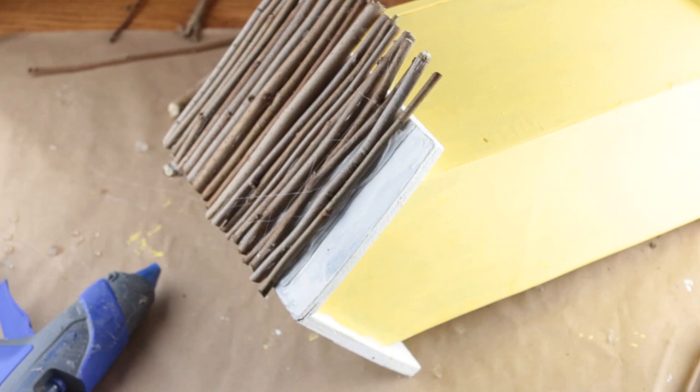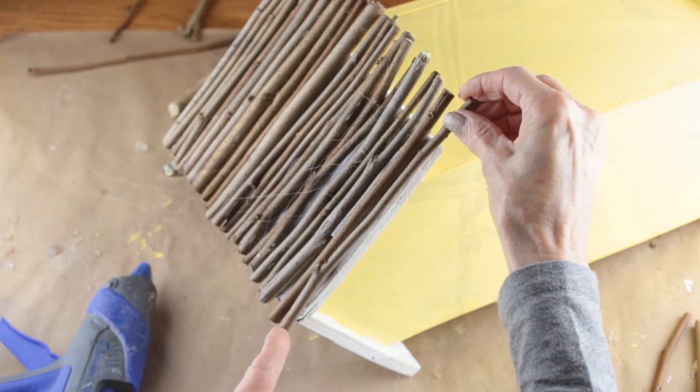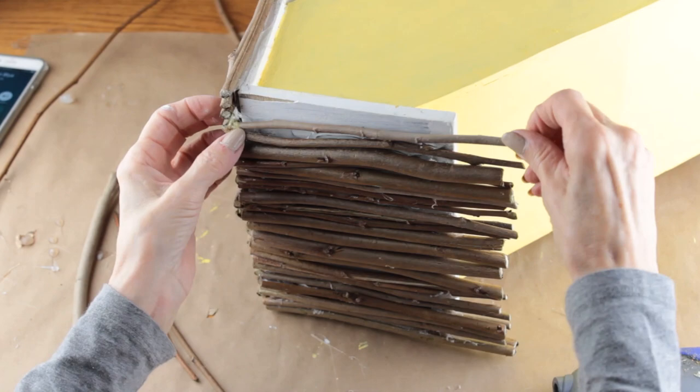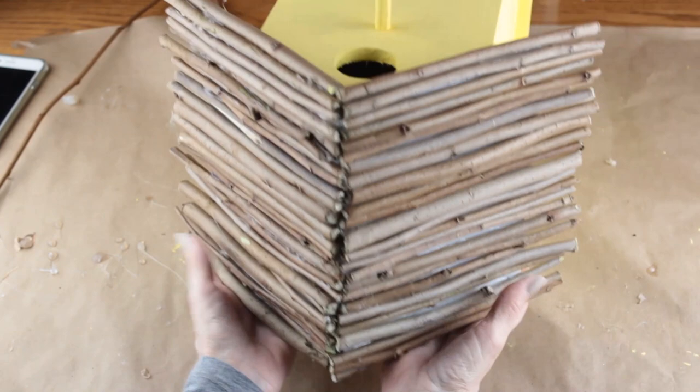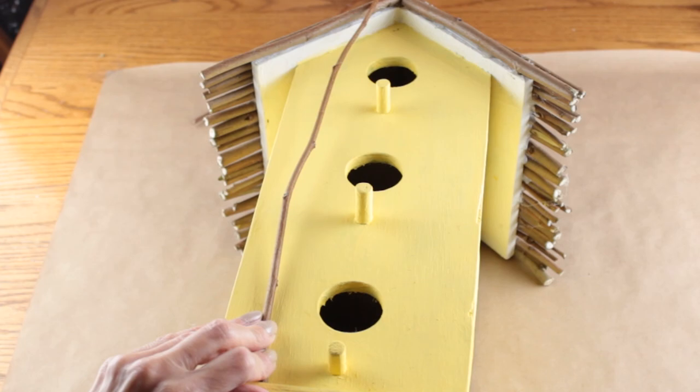After one side of the roof was complete I then moved on to the other. I'm adding some twig accents to the front. I decided where to place them and then cut the pieces.